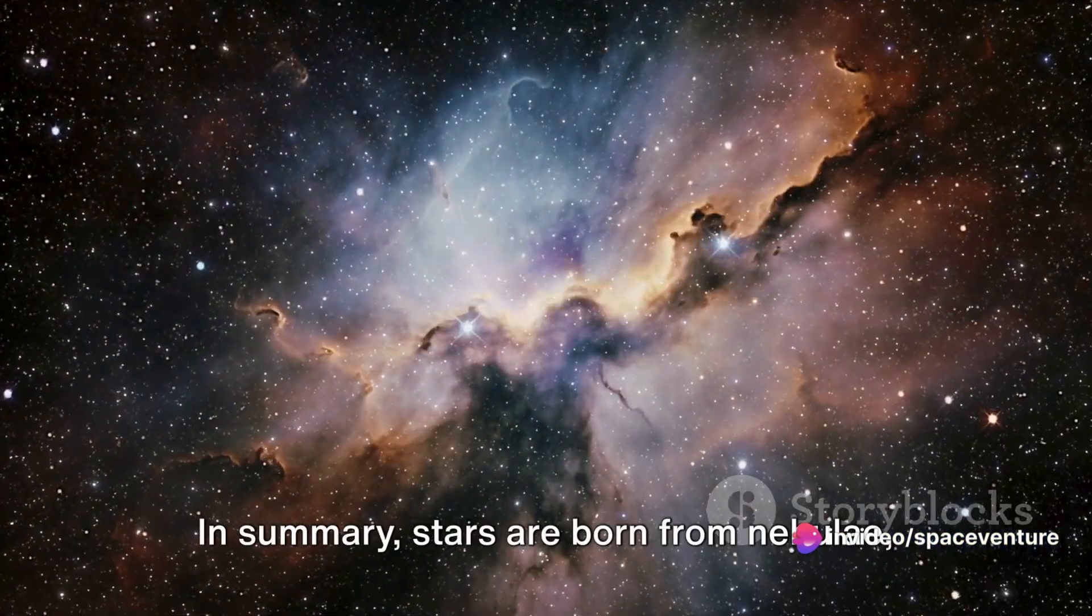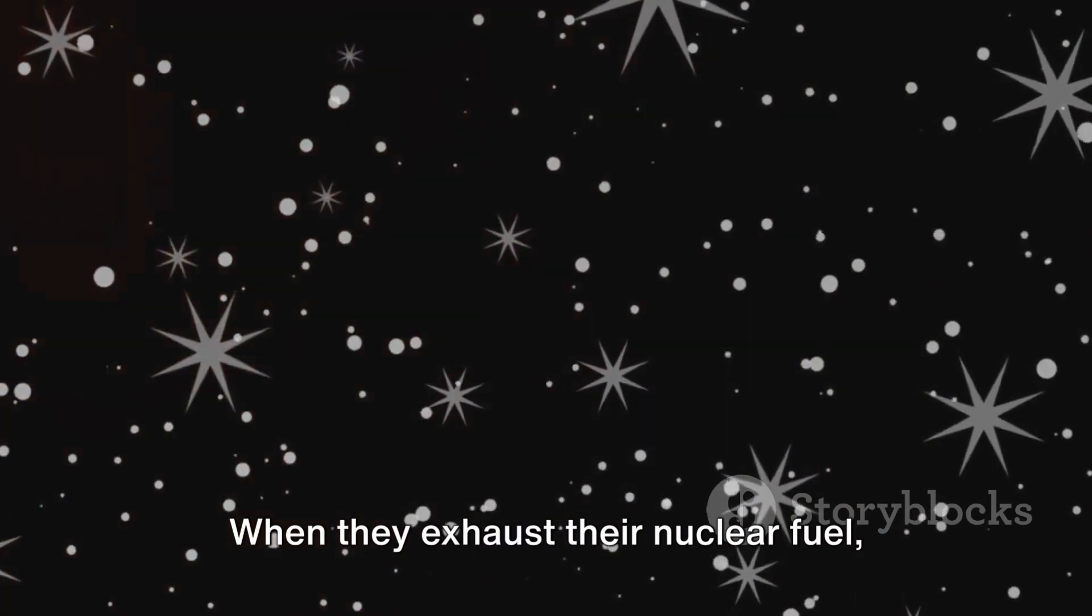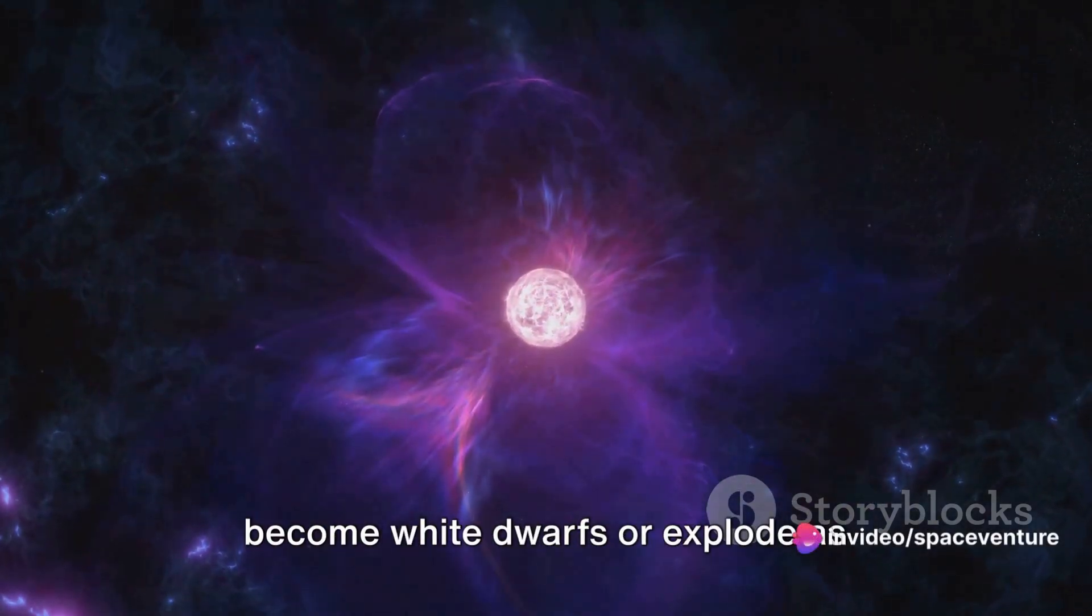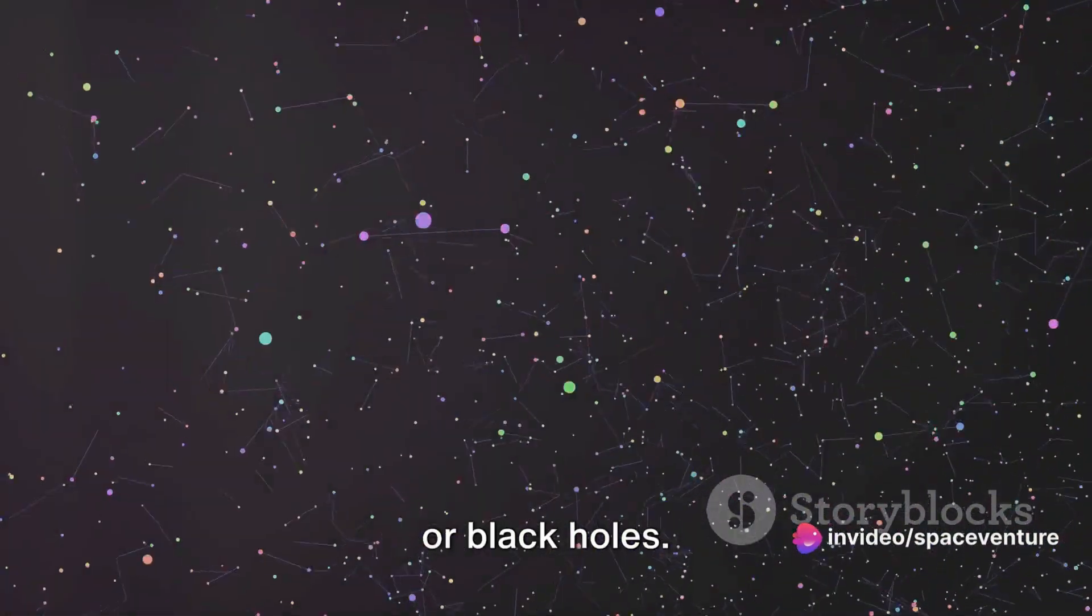In summary, stars are born from nebulae, evolve through various stages, are classified by their spectral characteristics, and have a layered structure. When they exhaust their nuclear fuel, stars either shed their outer layers and become white dwarfs or explode as supernovae, leaving behind neutron stars or black holes.